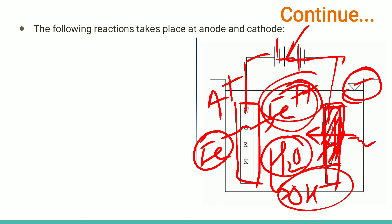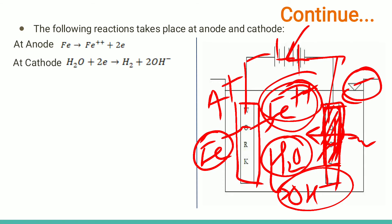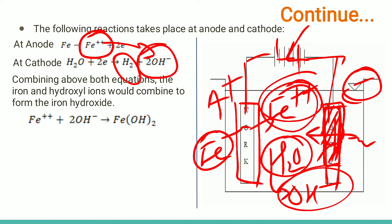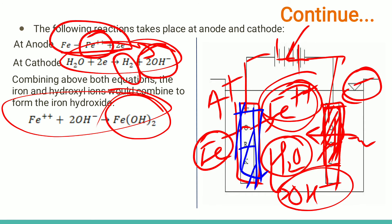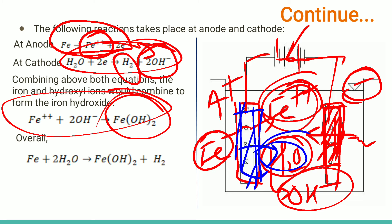At the anode, which is the workpiece, Fe⁺ ions are released. At the cathode part, water in the electrolyte forms hydrogen gas and releases OH⁻ ions. So overall, Fe⁺ ions react with OH⁻ ions. When they react, sludge is formed — that is Fe(OH)₂, iron hydroxide. Overall, what is happening is that the iron workpiece is reacting with the water. When Fe reacts with water, it forms Fe(OH)₂.